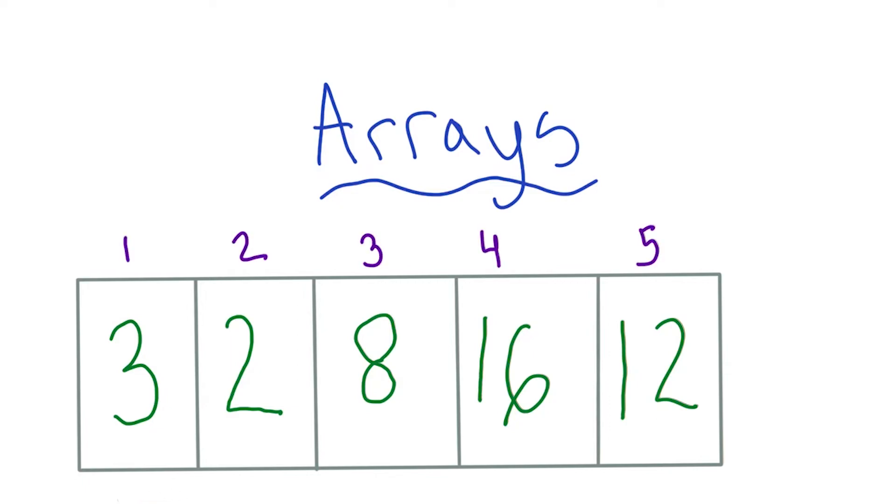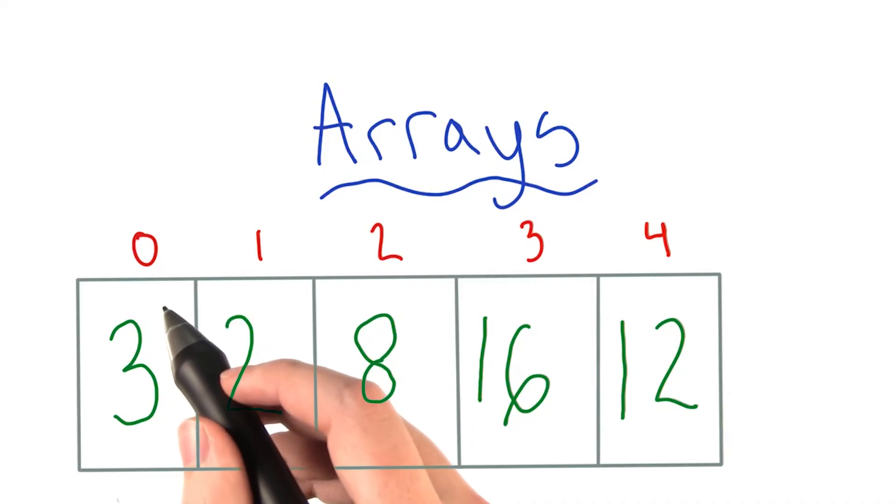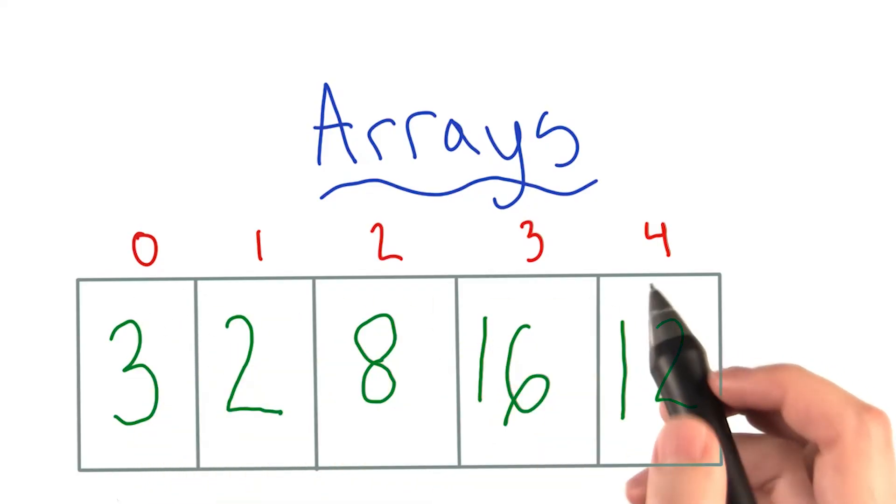It would make sense to number these boxes from 1 to 5, but of course it can't be that simple. Normally, an index starts at 0, so instead of referring to these boxes as 1 to 5, we usually say it's 0 to 4. Having indices can make using arrays a great or sometimes terrible choice for the code you're working on.